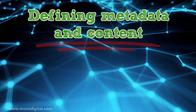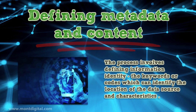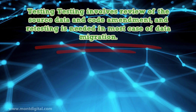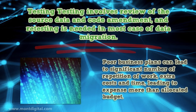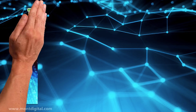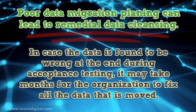Defining metadata and content involves defining information identity — the keywords or codes which can identify the location of the data source and its characteristics. Testing involves review of the source data and code amendment, and re-testing is needed in most cases of data migration. Poor business plans can lead to a significant number of repetitions of work, extra costs and time, leading to expenses beyond the allocated budget. Poor data migration planning can also lead to remedial data cleansing. If data is found to be wrong during acceptance testing, it may take months for the organization to fix all the data that was moved.